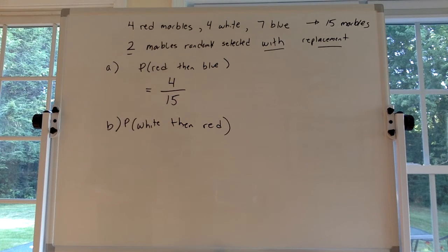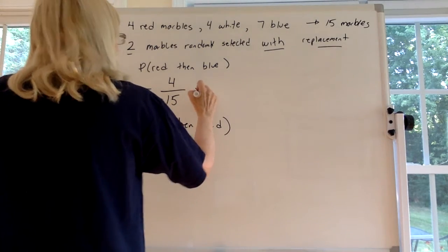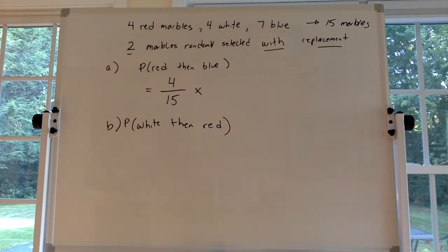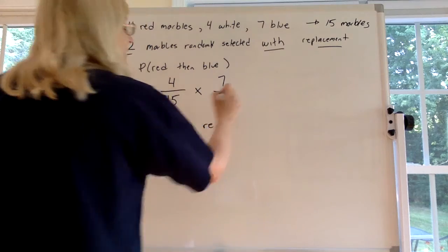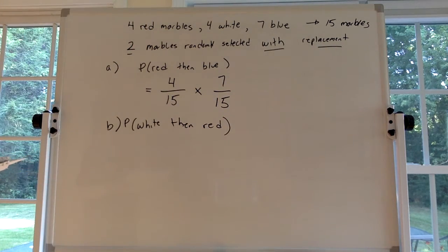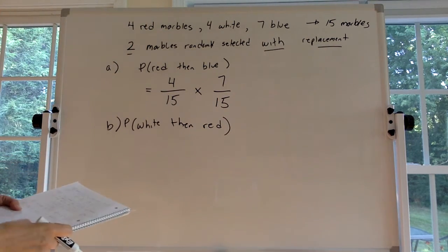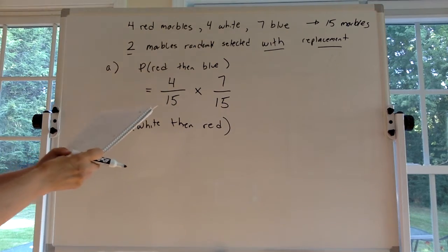So you looked at that, it's red, then you put it back in the bag. Now you have to multiply that by on the second draw you get a blue. How many blue are there? There's seven blue and there's still 15 in the bag as you did with replacement. So you get 4 over 15 times 7 over 15.